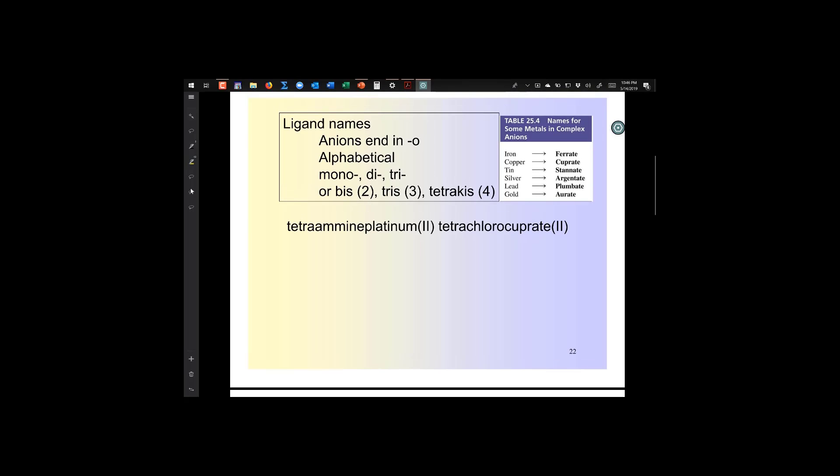So we'll work this complex ion out. This is tetraamine platinum(II) tetrachlorocuprate. This is the cation. This is the anion, and we'll go ahead and break this up and figure out what the complex ions look like. So for the platinum, it's a 2+ ion. It has tetra, which means four, and amine is what you use for the name of ammonia. So it would be NH3 four.